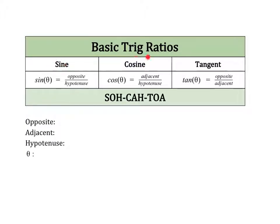Each of these three ratios has a different relationship between two of the sides of a right triangle. By definition, sine of theta is opposite over hypotenuse. The cosine of theta is adjacent over hypotenuse, and the tangent of theta is opposite over adjacent.